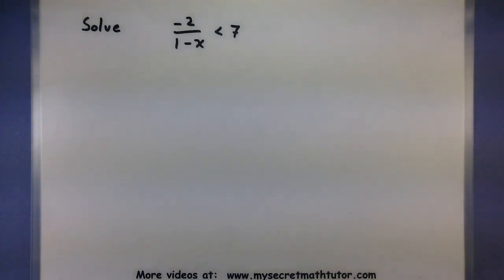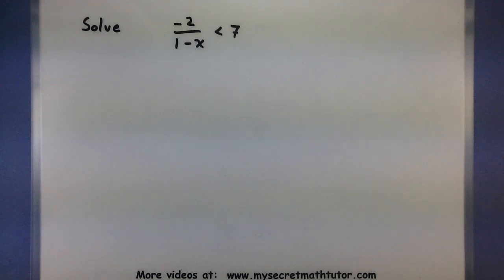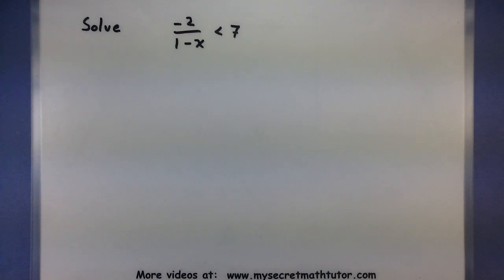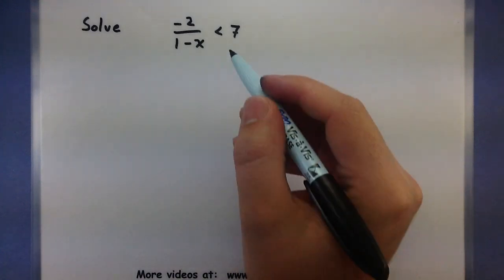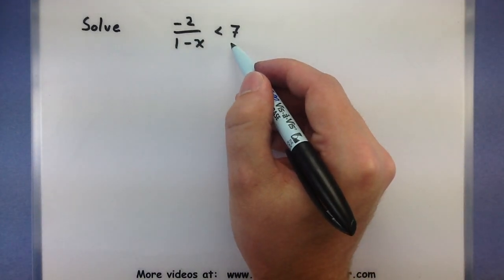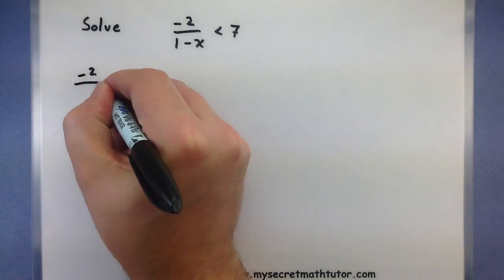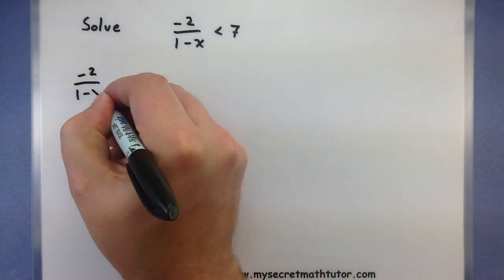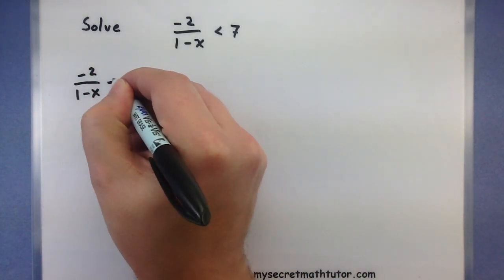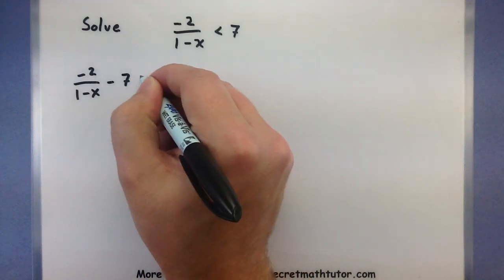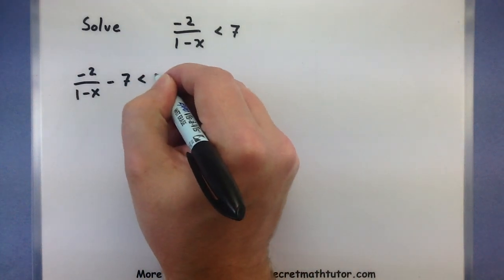In the first example, I want to solve negative 2 divided by (1 minus x) is less than 7. I'll start with step 1 and get everything over onto one side. Let's subtract 7 from both sides, giving us: negative 2 over (1 minus x) minus 7 is less than 0.